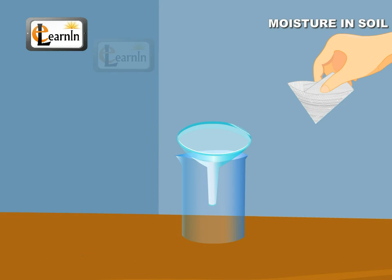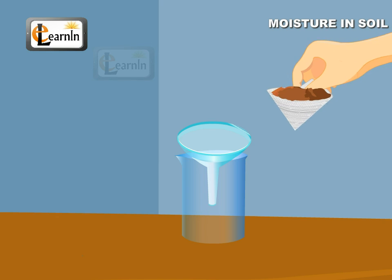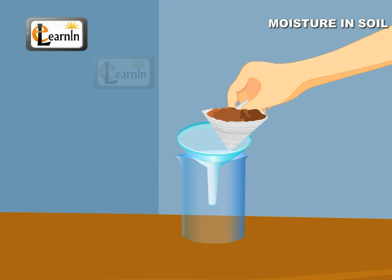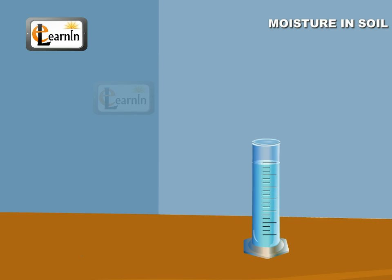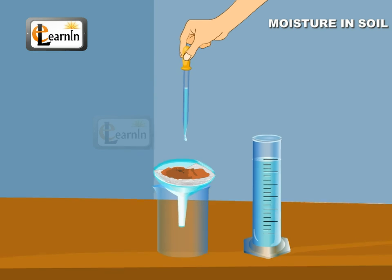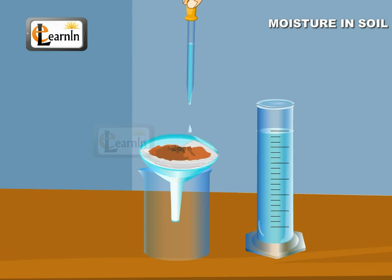Fold a filter paper and fill it with 50 grams of soil and place it in the funnel. Measure a certain amount of water using a measuring cylinder. Now pour this water all over the soil using a dropper.